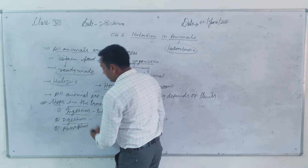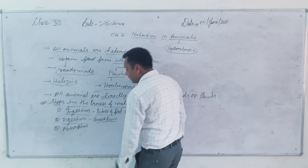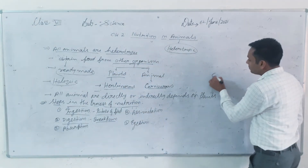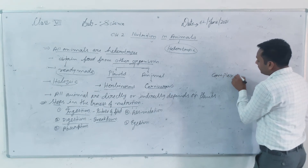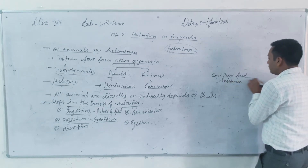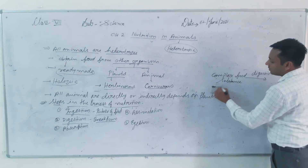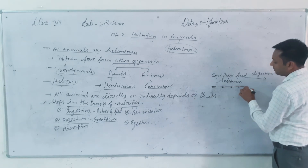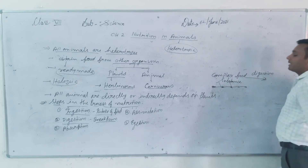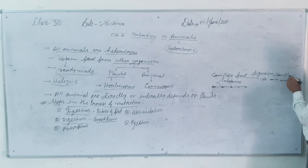The second step is digestion. Digestion means the breakdown of food. Food consists of complex substances like carbohydrates, proteins, and fats. Through chemical processes in the body, these complex food substances are converted into simple food substances — from long chains into small chains.